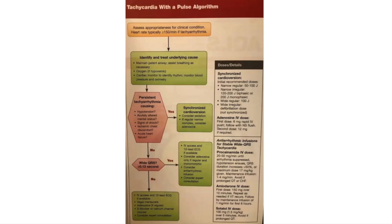If the patient has a narrow complex rhythm and is unstable — altered mental status, signs of shock, hemodynamic instability — we should consider immediate synchronized cardioversion. If IV access and time allow, consider sedation. Cardioversion should be according to the manufacturer's energy recommendation. The Zoll currently recommends starting narrow complex cardioversion at 50 to 100 joules, and we will almost always have a biphasic device.